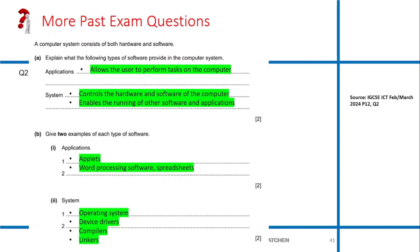Now we look at questions from 2024 February/March session. The first one says a computer system consists of both hardware and software. Explain what the following types of software provide in the computer system. Application software: it allows the user to perform specific tasks. Like you have an application for computer-aided design - it allows you to do design. You have an application like Excel - what does it give you? It helps you do calculations.